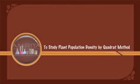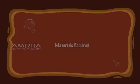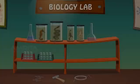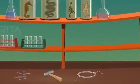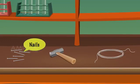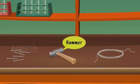To study plant population density by quadrat method. Materials required: nails, a hammer, and thread.